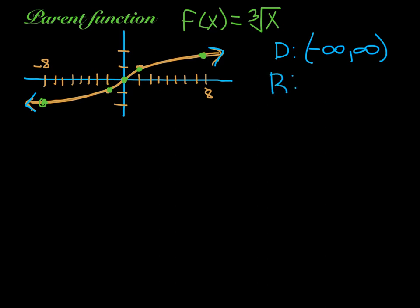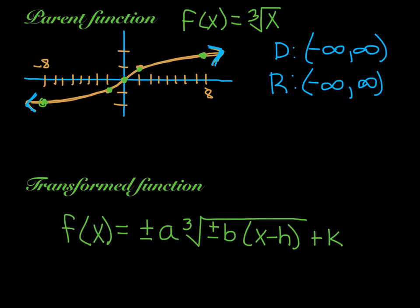The range of this is going forever to the left, but it's also heading downward at the same time. This one's heading upward at the same time. So our range is also negative infinity to infinity. And then our transformed function, exactly the same thing as when we did the square root. So I'm not going to go over what every letter does again. Remember we have plus or minus A. You can have a plus or a minus B. Make sure you factor it out. And then you can have an H and a K or a C and a D, depending on what letters you want to use.